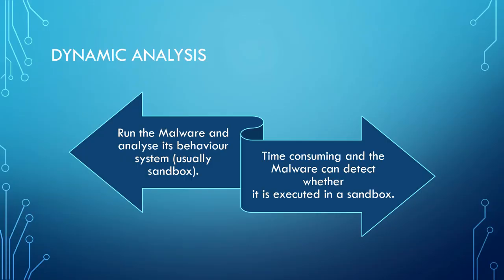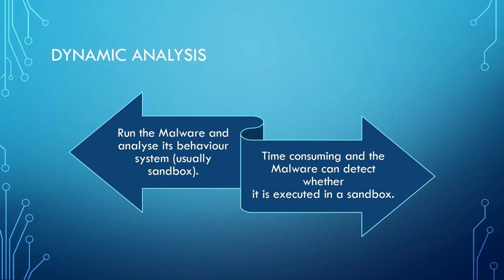Dynamic analysis means we run the malware and look for indicators of compromise — for example, URLs the malware accesses, files it creates, or registry entries it manipulates. We build a profile of the malware to determine whether it's doing something malicious. However, malware has protections for dynamic analysis too: it can attack your analysis system, and if it detects you're trying to get information from it, it will stop its malicious behavior. You need to trigger it, which is a very interesting area.